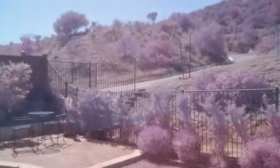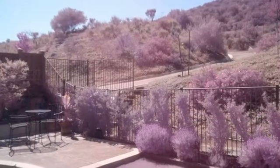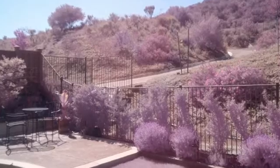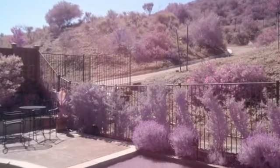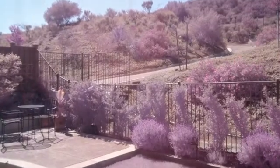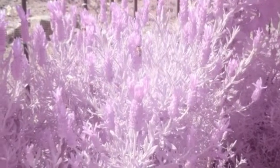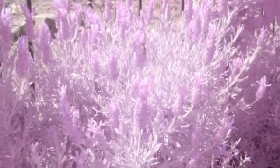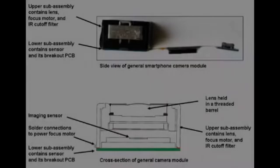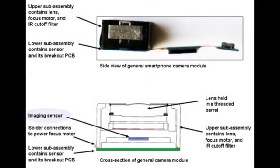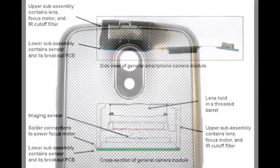In the real world, objects absorb and emit light not only in the visible spectrum but beyond what the human eye can see. Although people cannot see in the near infrared, abbreviated NIR, the image sensor in all smartphone cameras have some sensitivity in this range.